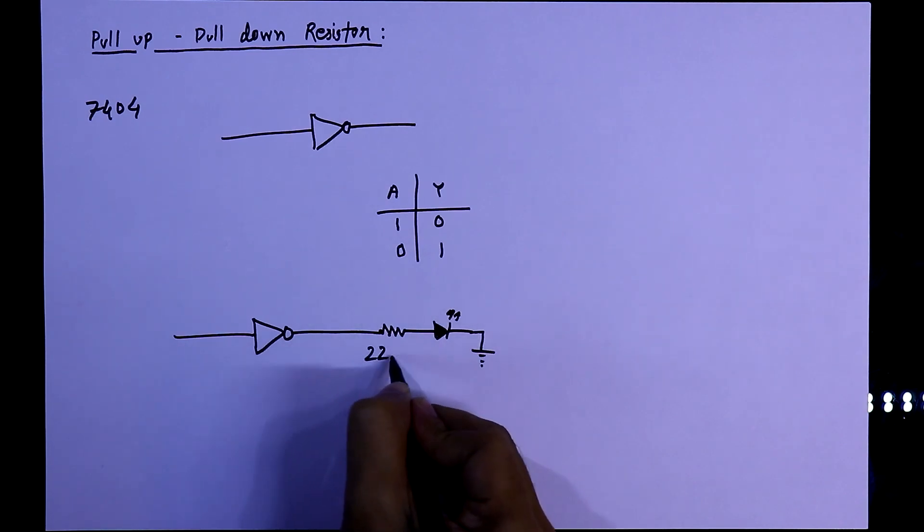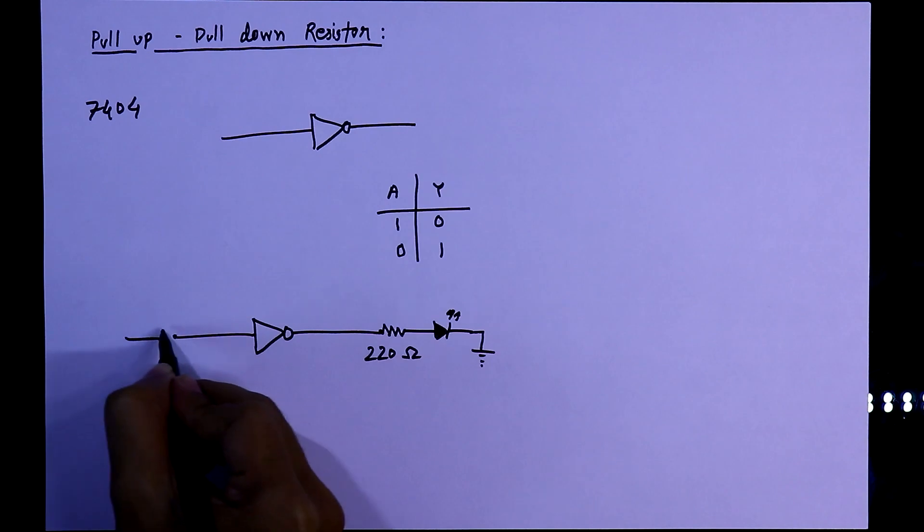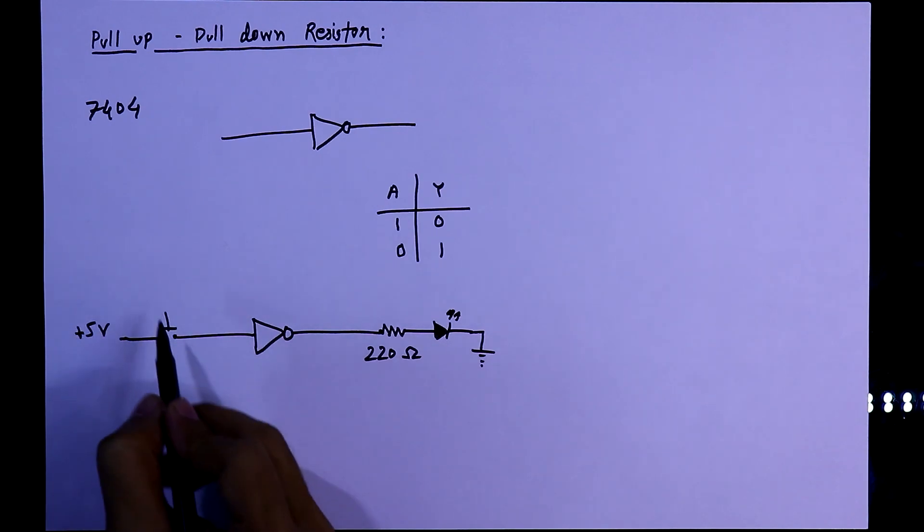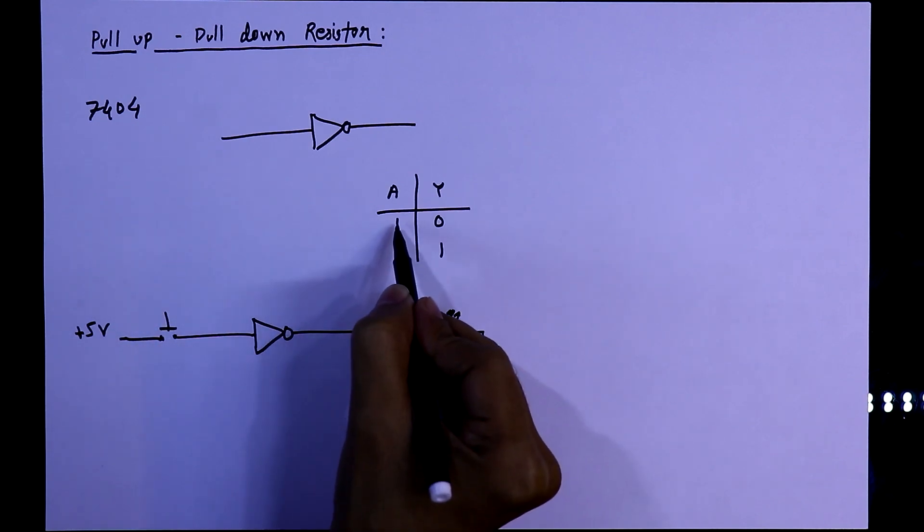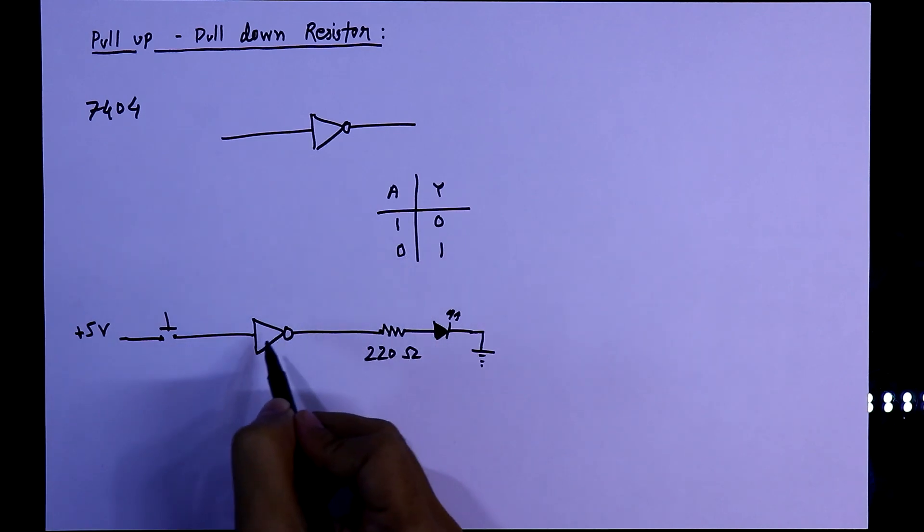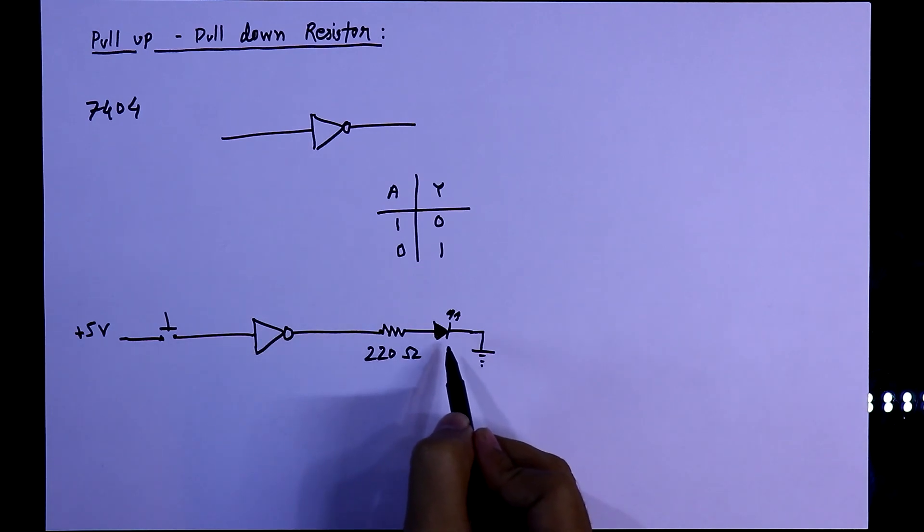The resistor value is 220 ohms. With the input I will connect a push-to-on switch, and this side is positive 5 volt. So whenever this switch is pressed, then this IC will get input 1, and when it is unpressed then the input will be 0. So according to this we should get the output.